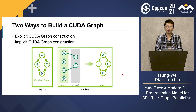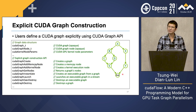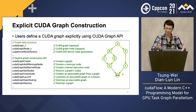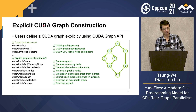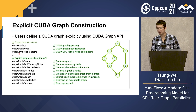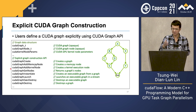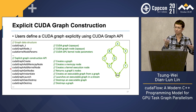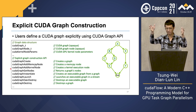There are two ways to build a CUDA graph: explicit CUDA graph construction and implicit CUDA graph construction. Explicit CUDA graph construction refers to users defining a CUDA graph directly using CUDA graph API — such as creating a CUDA graph, creating an edge, adding parameters to an existing kernel node, instantiating an executable graph, launching the graph, synchronizing the graph execution, and so on. Basically, explicit CUDA graph construction is a straightforward method for constructing a GPU task graph, with a one-to-one mapping between your application task graph and the corresponding native CUDA graph.